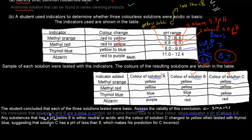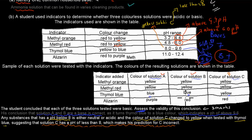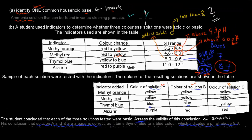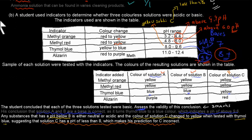Any substance with a pH below 8 is either neutral or acidic, not basic. The color of solution C changed to yellow when tested with thymol blue. This observation suggests that solution C has a pH of less than 8, which makes the student's prediction for solution C incorrect. So A and B are bases, but C is probably not a base. You get marks for justifying both parts.